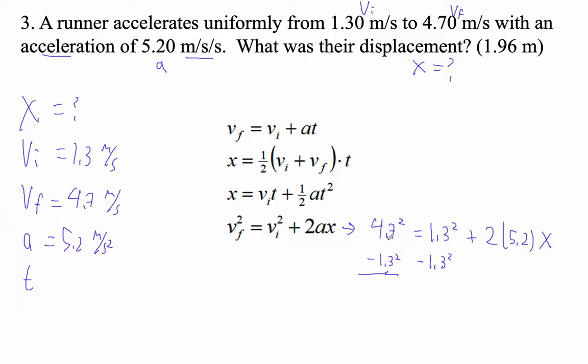So I'm going to go 4.7 squared minus 1.3 squared, and this comes out even to 20.4. And 1.3 squared minus 1.3 squared, that just goes away. So 20.4 equals 2 times 5.2 times x.